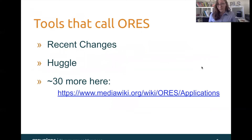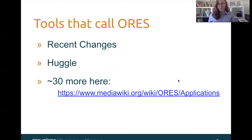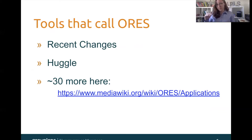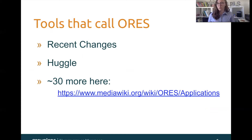ORS is widely deployed across many different contexts in Wikipedia — there are over 30 listed on this link here. One of the common ones is recent changes, which is a list that in real time feeds edits to Wikipedia as they are coming in. Patrollers of Wikipedia often look at recent changes in order to find instances of bad edits that need to be reverted and removed from the encyclopedia.